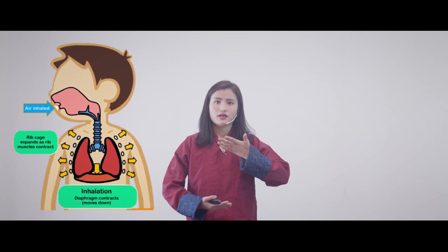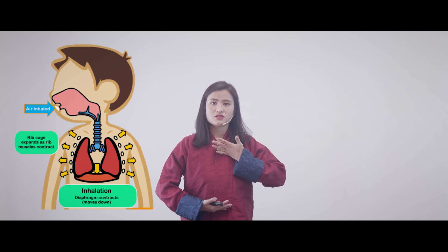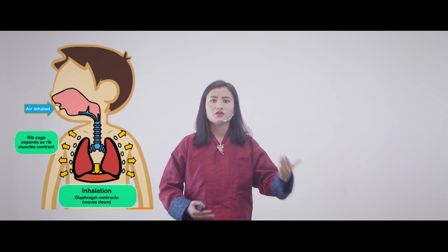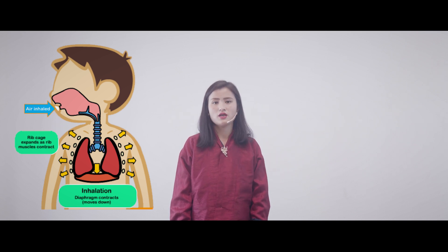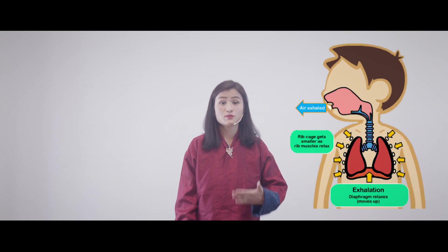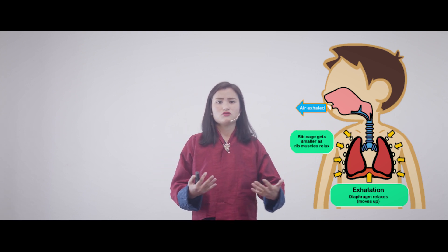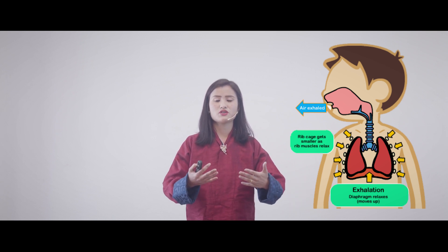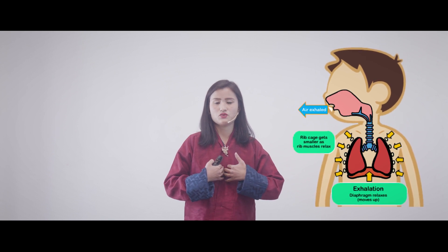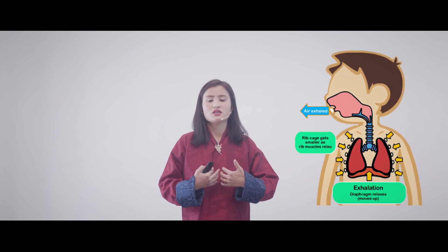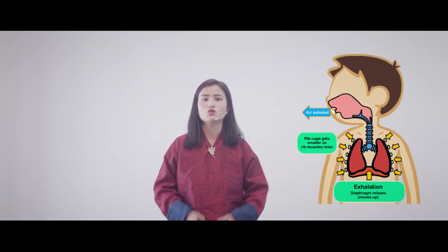When the diaphragm flattens up, the chest cavity increases, and because of the low pressure created, more air gets inside your lungs. During expiration, just the opposite happens. You can practice along with me — just try to breathe out. When you breathe out, your ribs go inward, your lungs get deflated, and your diaphragm returns to its dome shape.